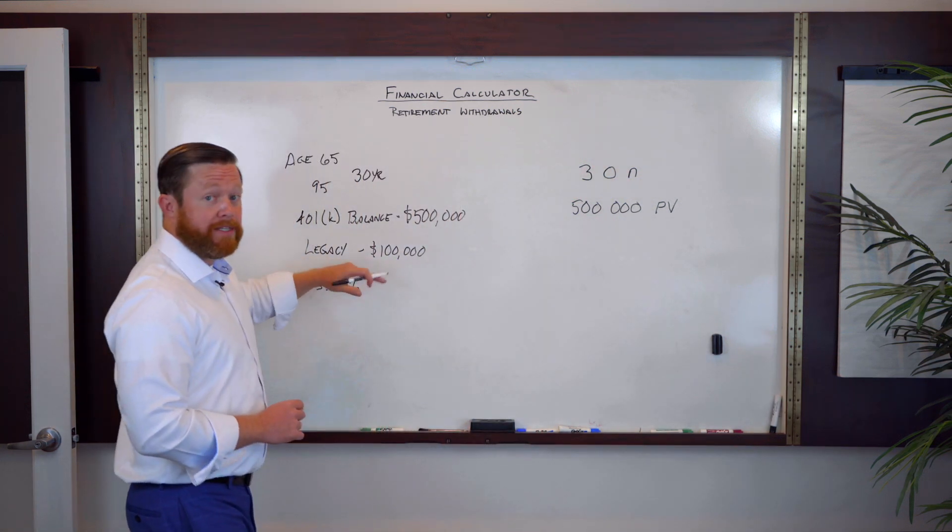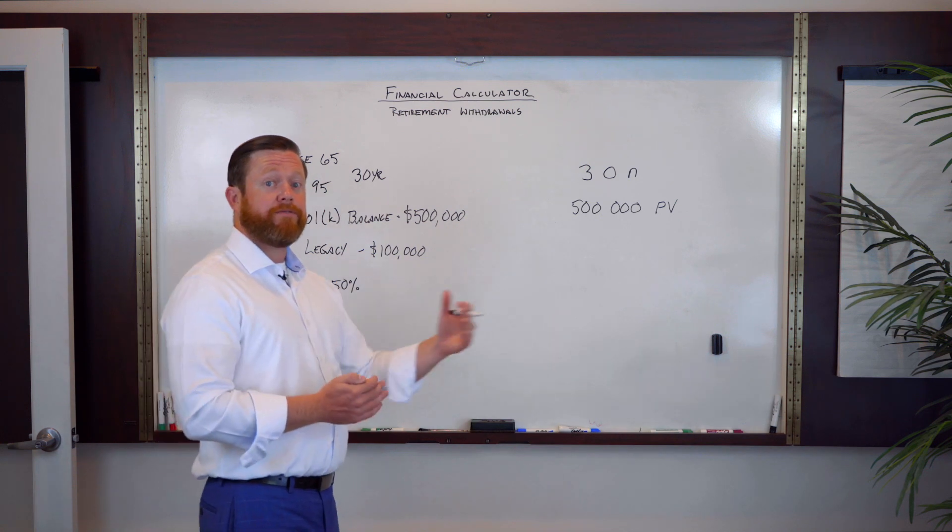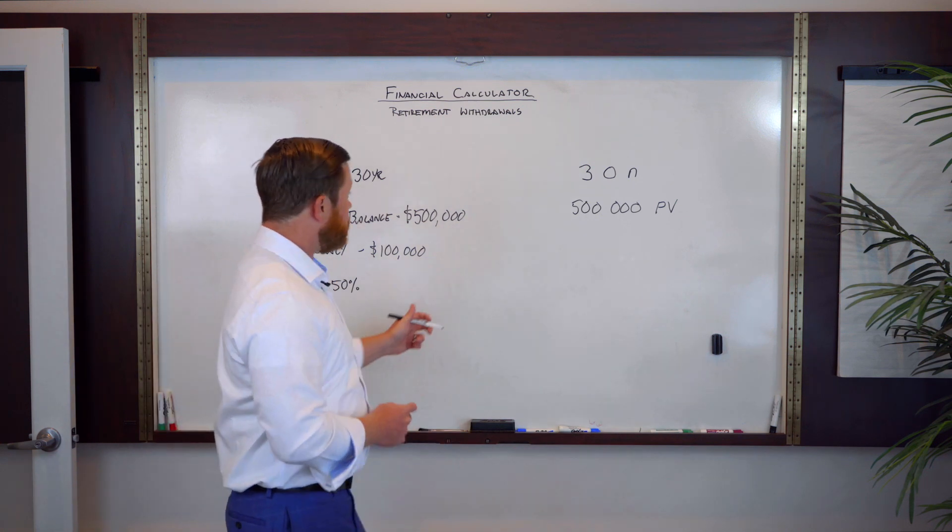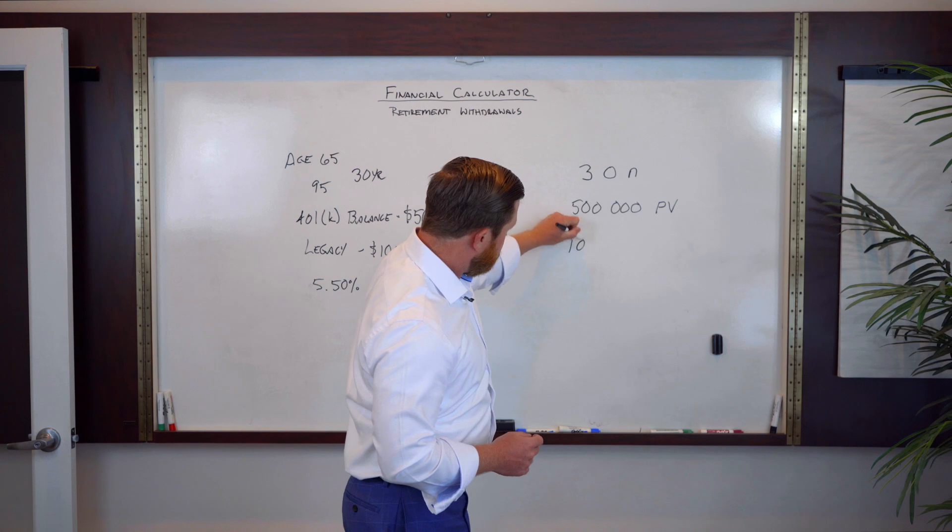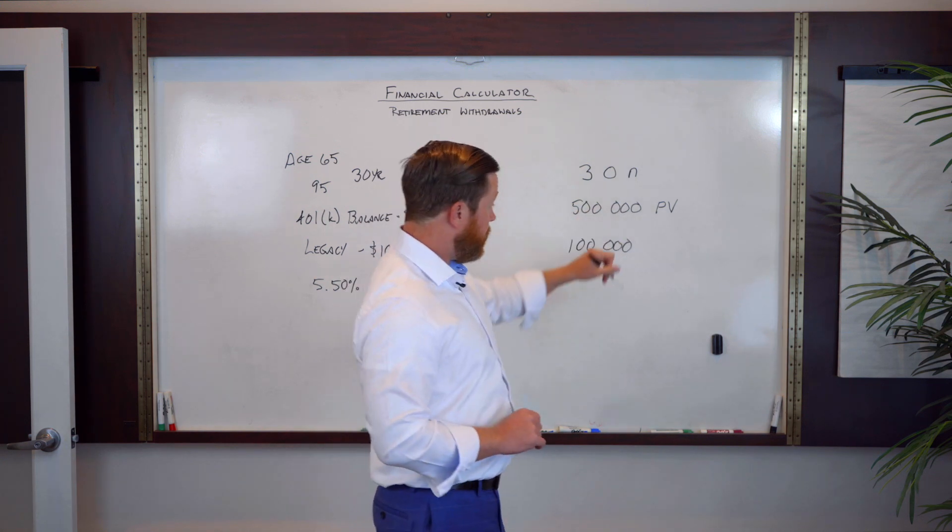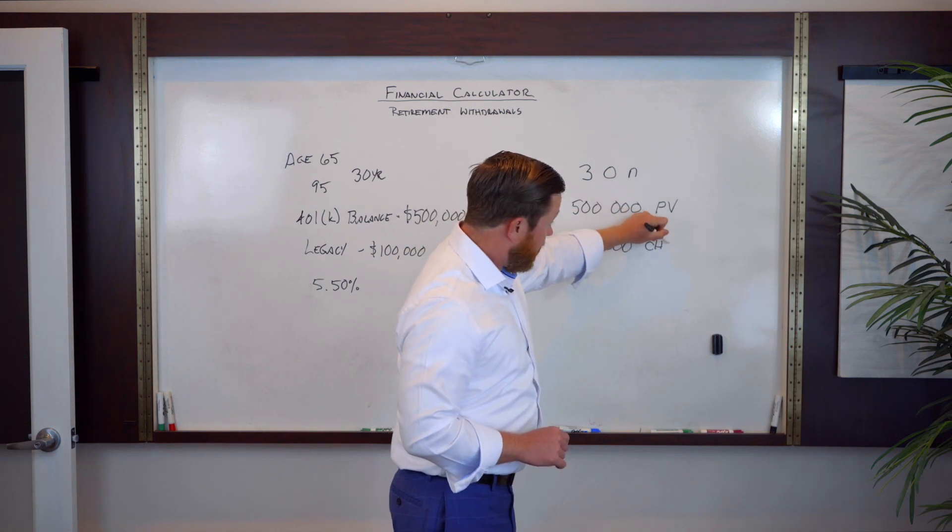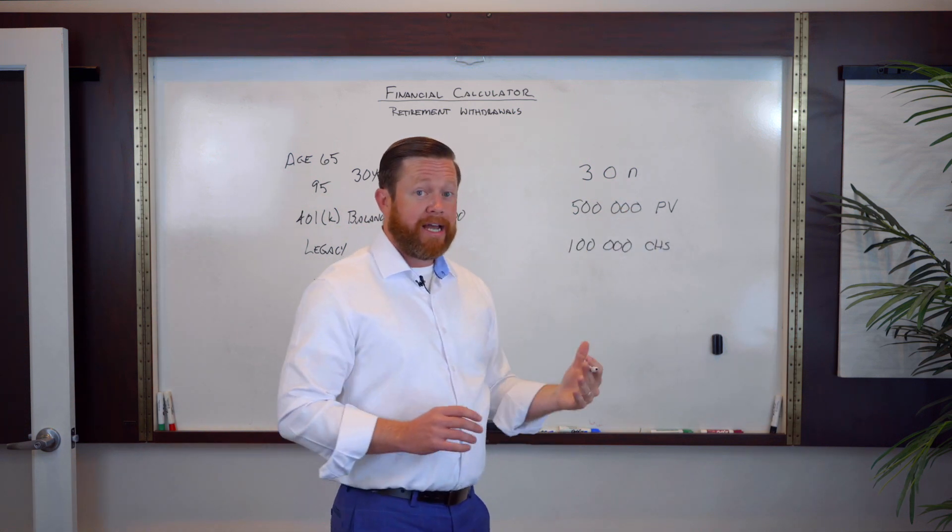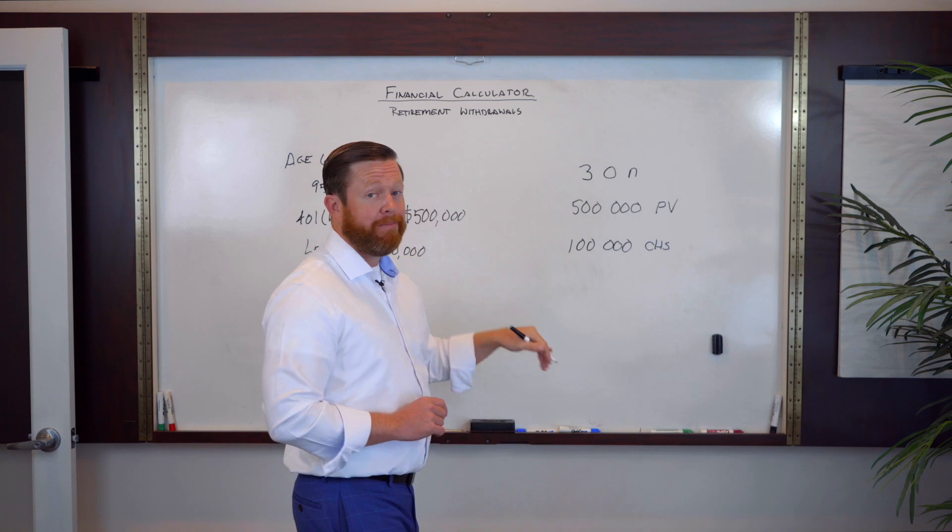Next, we have this $100,000 that we want to make sure is left over for estate planning purposes. So we're going to do $100,000. A little bit of a change here. We do CHS, which means change sign. So that's effectively going to put a minus at the beginning.